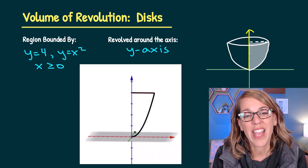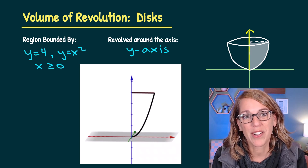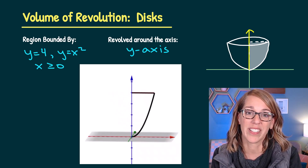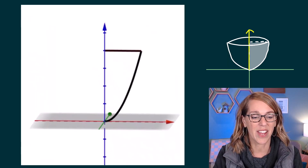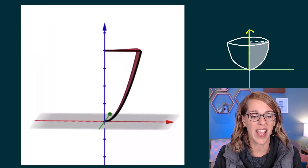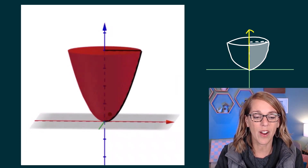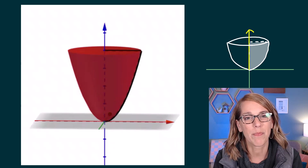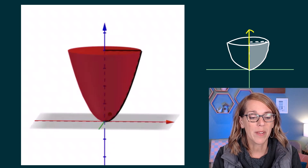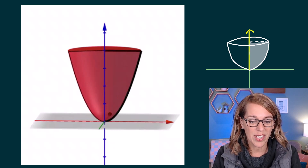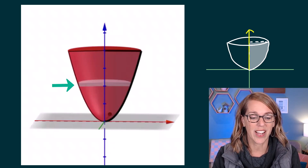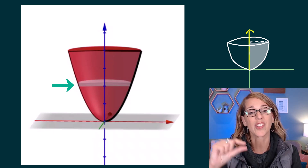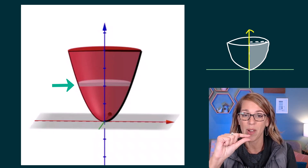Shout out to the creator of the applet that I'm going to show you — link down in my description. This applet really makes the volume come alive for us. I'm going to take this area and revolve it around the axis, so you can see that we are forming a solid, a three-dimensional solid, kind of like a bowl shape. We're going to be finding the volume using cross sections, and those cross sections are going to be disks — circular cross sections with a thickness in the y direction.